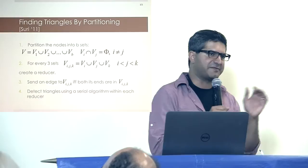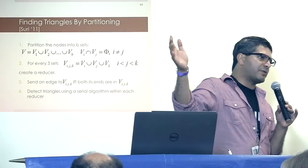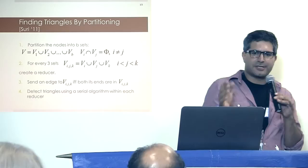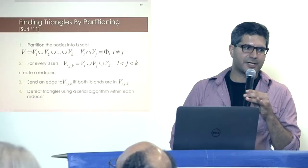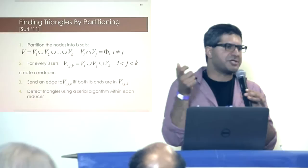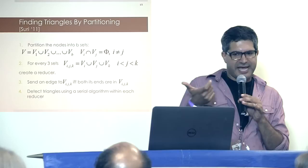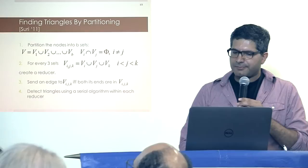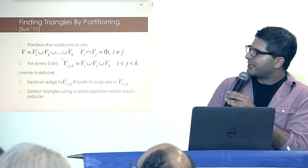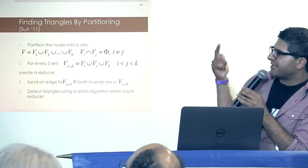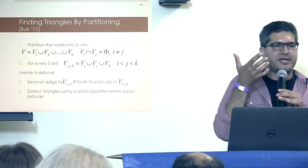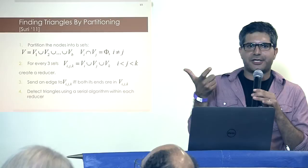I'll do the same triangle-finding but with a slight twist. Why don't I partition the nodes into B sets? I have B different sets that partition my nodes — presorted using a hash function, so I know for every node ID which of these B sets it belongs to. Then when I receive an edge, for every three-subset of those partition sets I'll create a bucket, and I send the edge to all buckets where both ends of that edge are members.